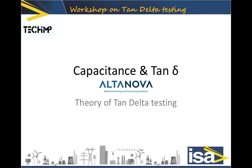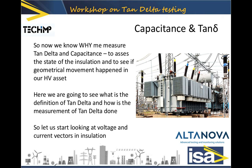In this video we're going to go a little bit more in depth. We're going to see how current and voltage behave in those schemes. We also saw last time that even a small current in phase with high voltage generates heat that weakens insulation and brings about a chain reaction which can result in a fault on a high voltage or medium voltage asset. We measure tan delta and capacitance to assess the state of insulation and to see if geometrical movement happened.